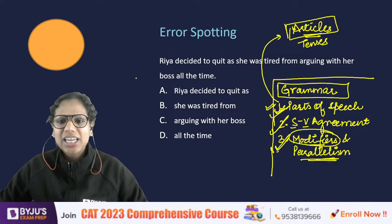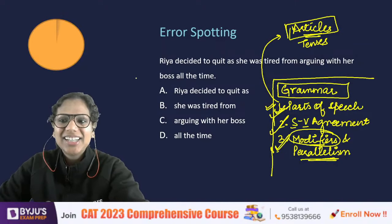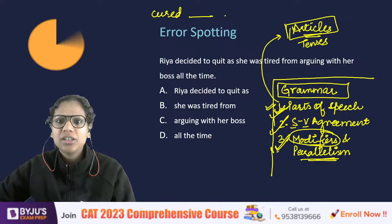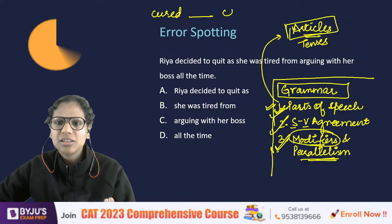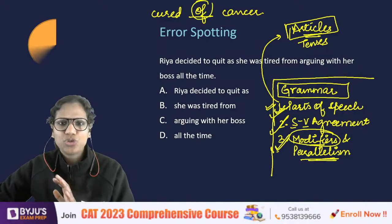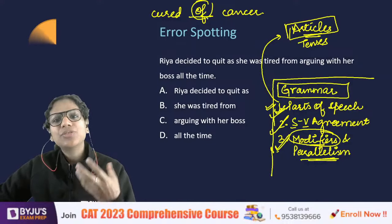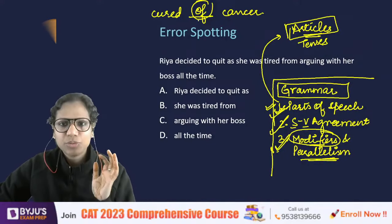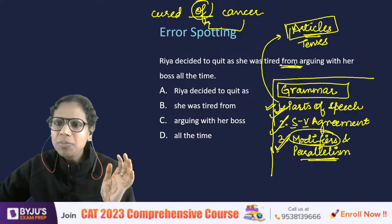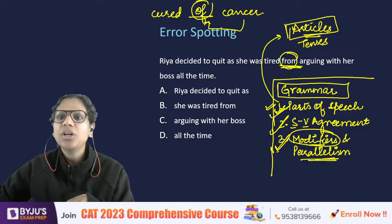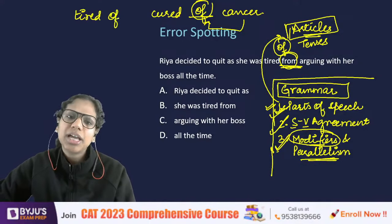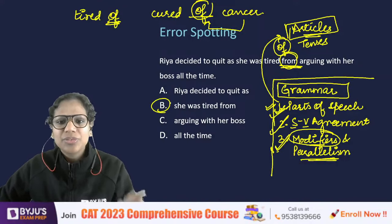Now let's see an error spotting question. In a previous session, we did a fill-in-the-blank involving 'cured of a disease' — after 'cured' we put the preposition 'of.' Prepositions have fixed usage after certain verbs. Here, 'tired from arguing with her boss' is incorrect. You are tired of something, not from something — just like after 'cured' we use 'of,' after 'tired' we also use 'of.' So B is the erroneous part.